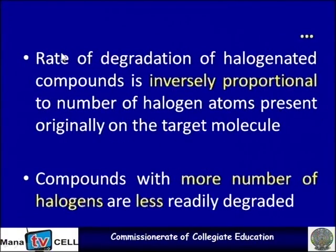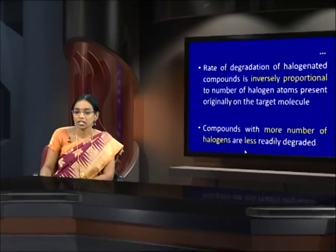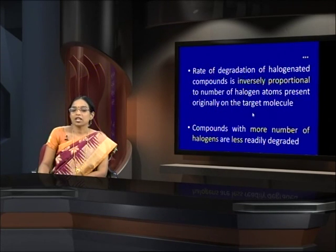For halogenated aromatic hydrocarbons, the rate of degradation is inversely proportional to the number of halogen atoms present on the target molecule. That is, if more halogen atoms are present, the compound is less readily degraded. Chlorine must be separated out first, and then ring opening must take place, so it requires more time to degrade.